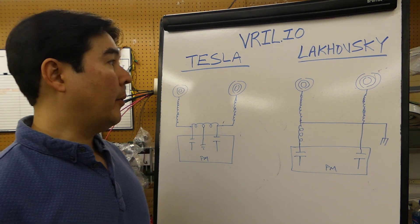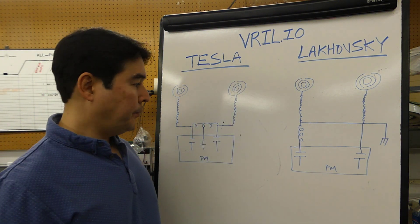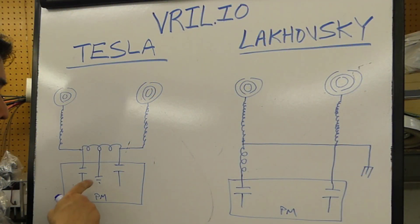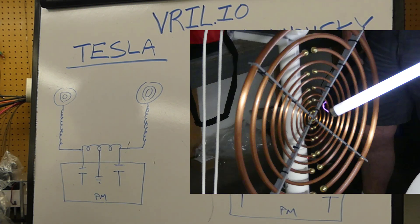What I want to cover in this segment is the difference between the Tesla and the Lakhovsky setup. This PM box stands for the Pulse Modulator. That's these cases which have a spark gap, high voltage transformer, chokes, all the capacitors in parallel and series, and then that outputs to a primary which steps up the voltage and is sent to these concentric ring antennas.